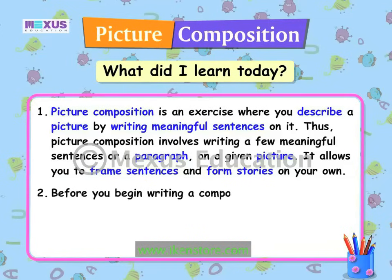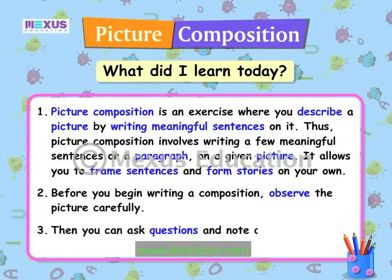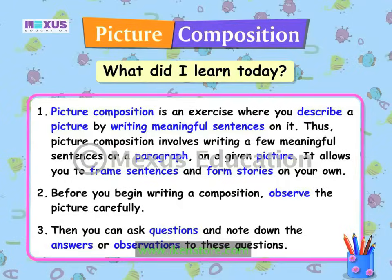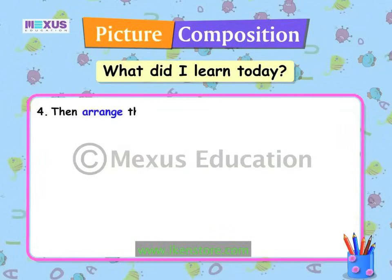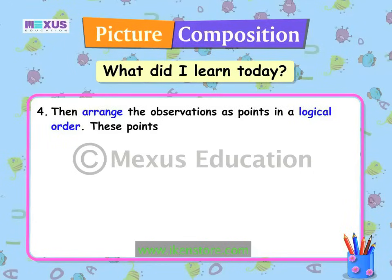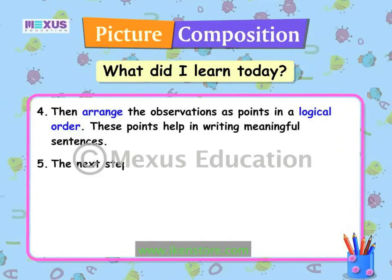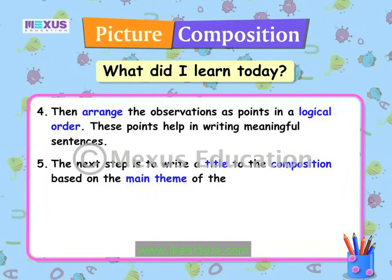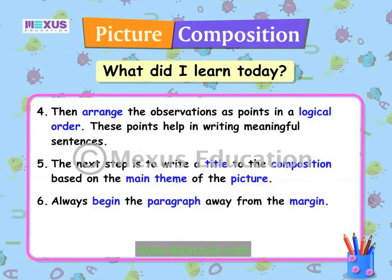Before you begin writing a composition, observe the picture carefully. Then you can ask questions and note down the answers or observations to these questions. Arrange the observations as points in a logical order — these points help in writing meaningful sentences. The next step is to write a title based on the main theme of the picture. Always begin the paragraph away from the margin.